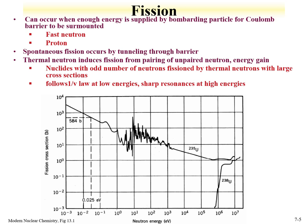In addition to thermal neutron-induced fission, fission can also occur if enough energy is supplied by the particle to overcome the Coulomb barrier. A fast neutron with extra energy can induce fission — shown here as neutron energy versus fission cross-section. For uranium-238, once we get up to 1 MeV, we start to see an increase in the fission cross-section. A proton can also induce fission, which we'll discuss at the end of the lecture.